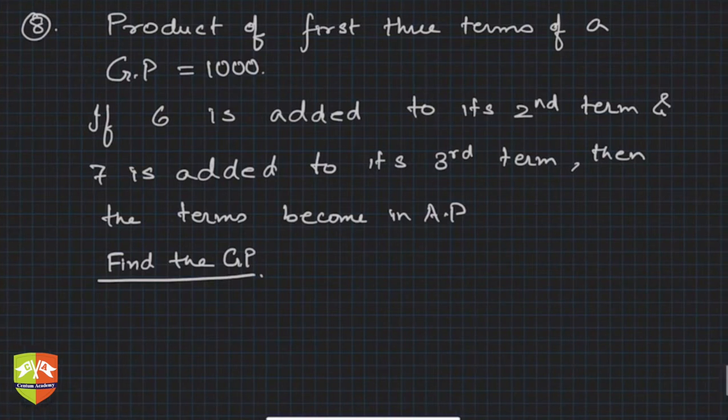The question is: product of first three terms of a GP is 1000. If 6 is added to its second term and 7 is added to its third term, then the terms become in AP. Find the GP.